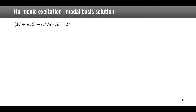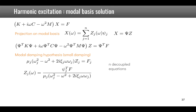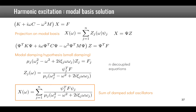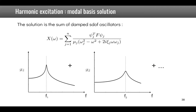We can also solve using the modal basis with real mode shapes. After projection and applying the modal damping hypothesis — assuming small damping so off-diagonal terms are neglected — each z_j can be solved independently. The solution is a sum over j from 1 to n of frequency-domain responses of damped single DOF oscillators: mode 1 with damped resonance at f1 and mode 2 with a different xi at f2.